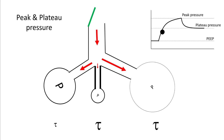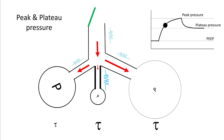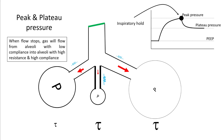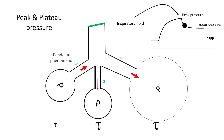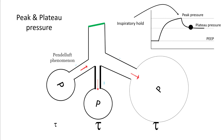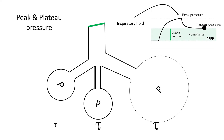During inspiration, the ventilator delivers the tidal volume, and as the tidal volume goes into the lungs, the pressure inside increases. Once all the tidal volume goes in, the pressure is at its highest — this is called peak pressure. This is where you perform an inspiratory hold. Once you do that, the pressures redistribute in the alveoli until they become constant, and that is called plateau pressure. The difference between plateau pressure and PEEP is called driving pressure.